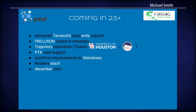Some of the things coming in the next release, 2.5: enhanced TerraSolid — both read, which we've had, but now write support. Not full spatial support, but much better write support than we've had in the past. ProjJSON support will be added, so instead of well-known text 2, you can now see projection information in ProjJSON, which is much easier to parse and to pick out portions of the projection. We'll be adding trajectory estimation as a plug-in, PTX read support, and workflow improvements to tile indexes. We'll also be adding a Stackit reader to Poodle, so you'll be able to read stack collections of point cloud data. The timeframe for this is looking to be December.